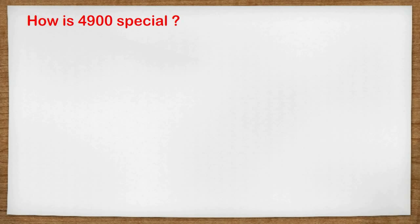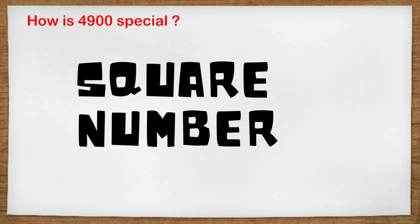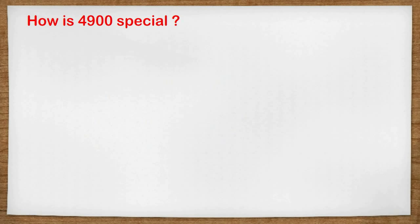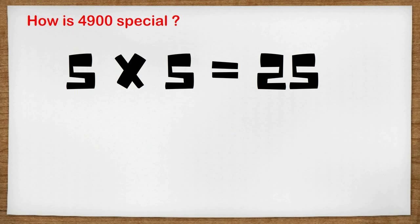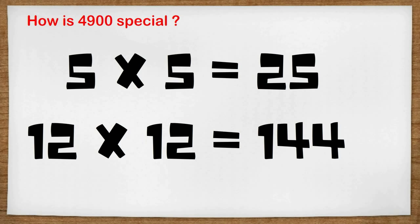If we multiply a number by itself, we get what we call a square number. So 5 times 5 is 25, so 25 is a square number. 12 times 12 is 144, so 144 is a square number.